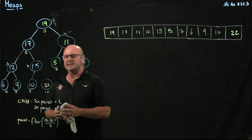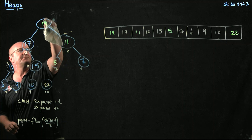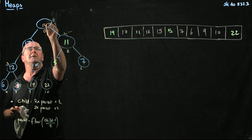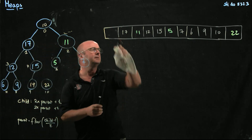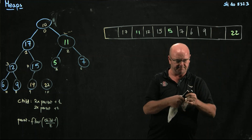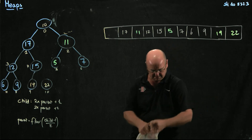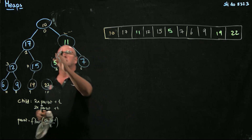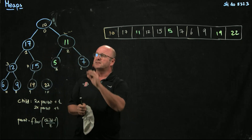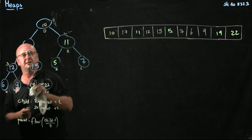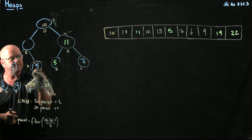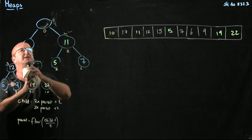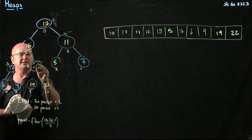So now what we're going to do is we're going to take the 19 away, and the way that we do that is we take the 19 and we swap it with the 10. And now we've got to do a trickle-down on the 10. So we're going to swap the 10 with the 15, so we end up with 17, 15, and 10.